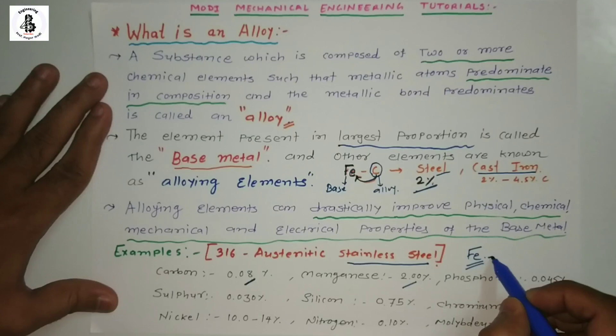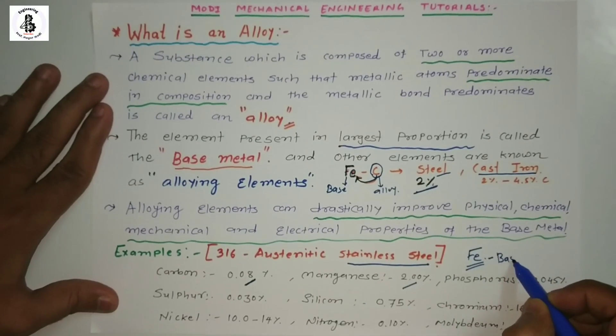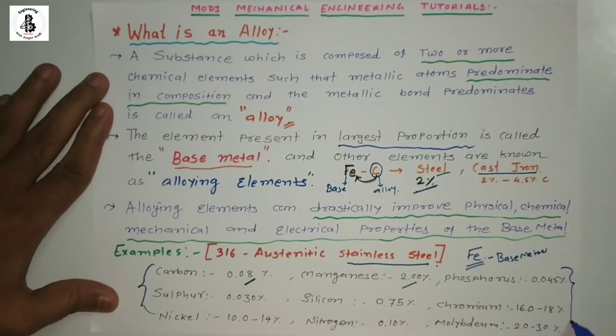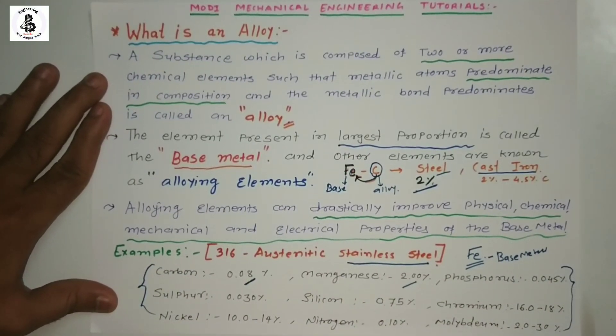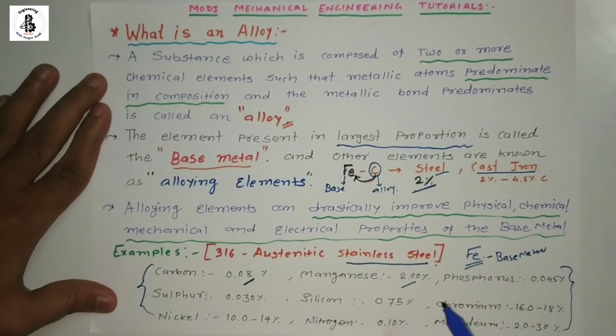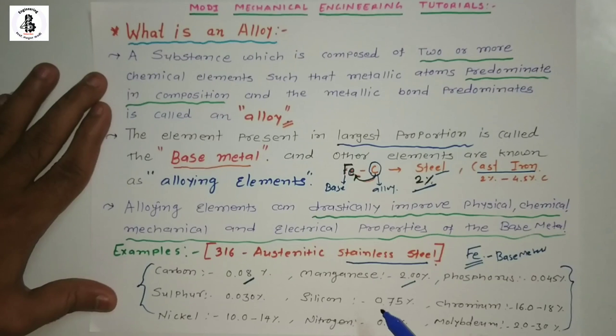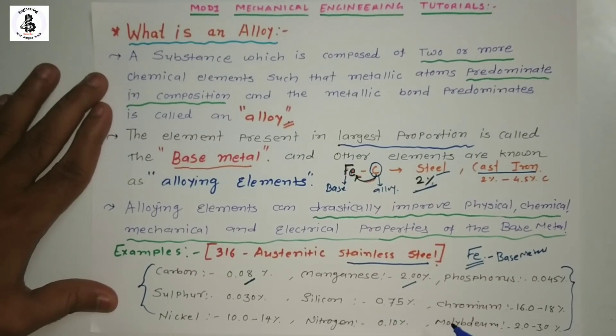Fe acts as the base metal and the rest of the elements represent alloying elements. According to the presence of alloying elements, the properties of the material are increased.